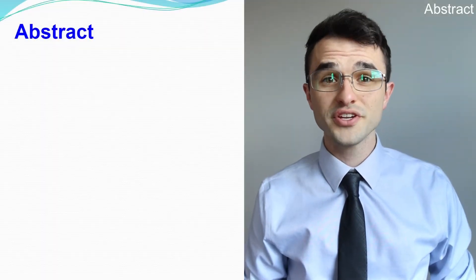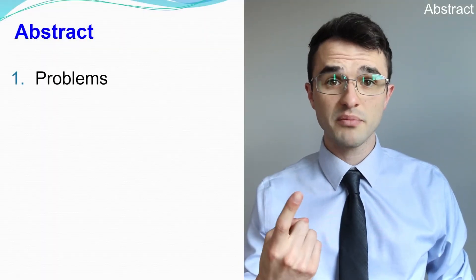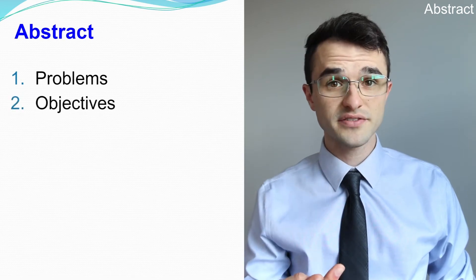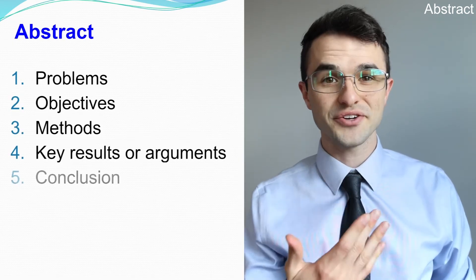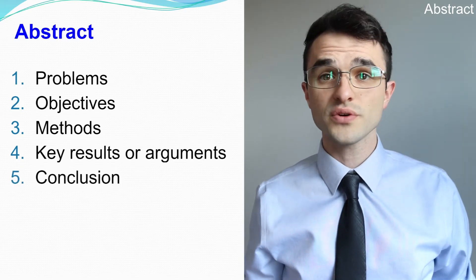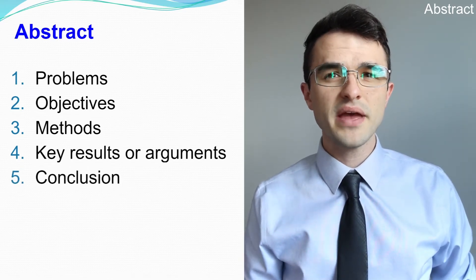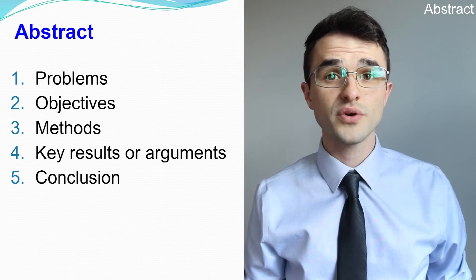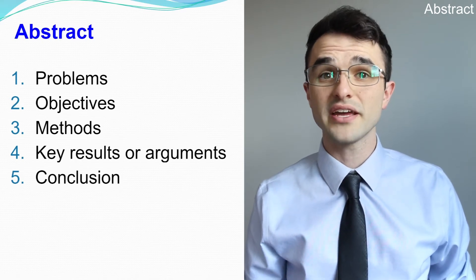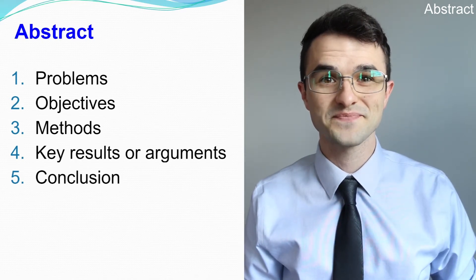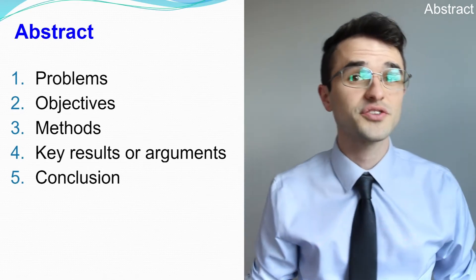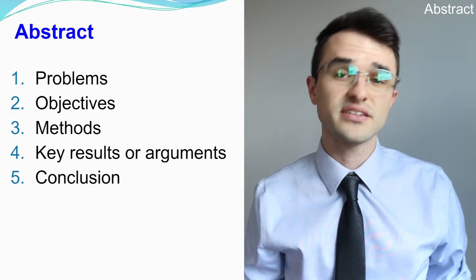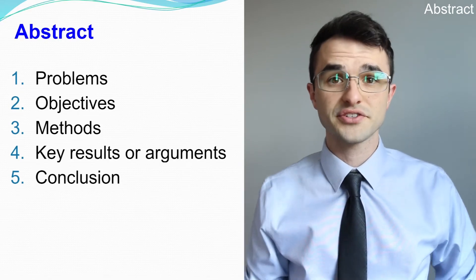The five things you should include are the research problems, the research objectives, the methods, the key arguments, and the conclusion. Each journal or style, such as APA, may have specific requirements for this section, so please pay close attention to their guidelines. It might be helpful to write your abstract after you finish the rest of your research paper, as the abstract has information from all other sections.